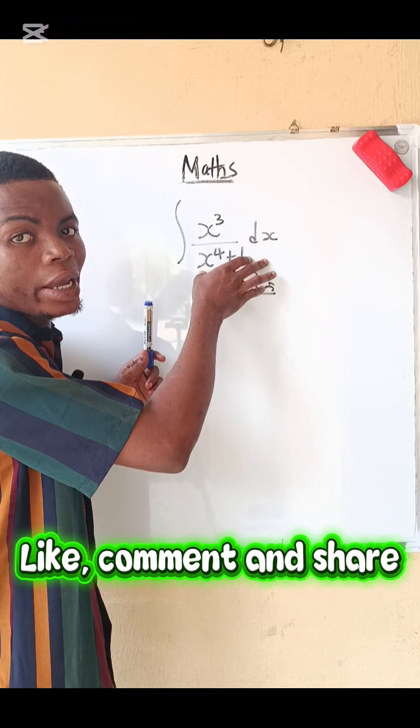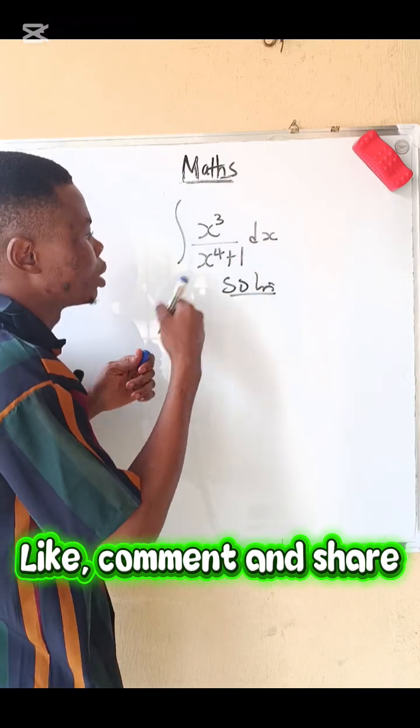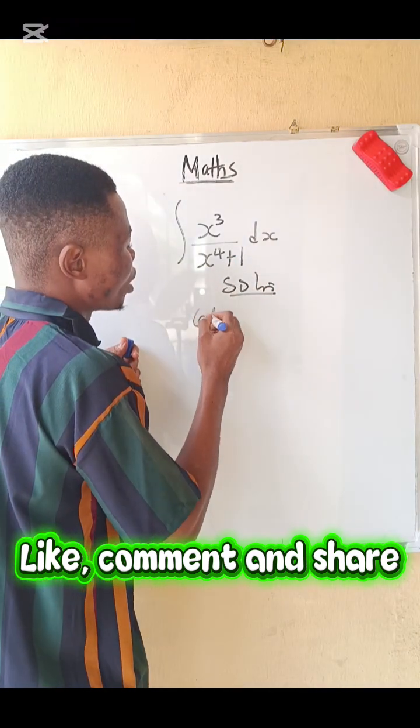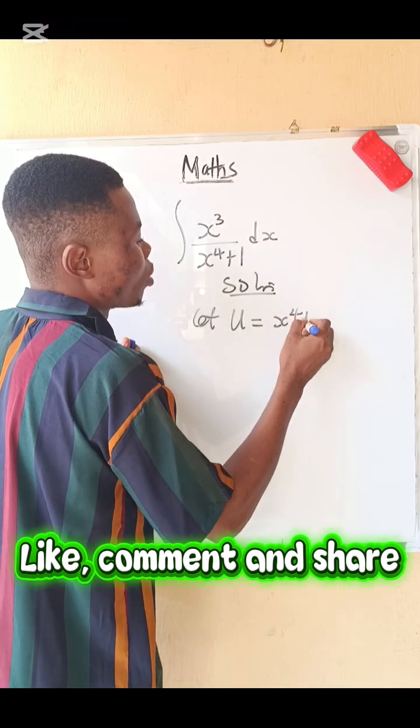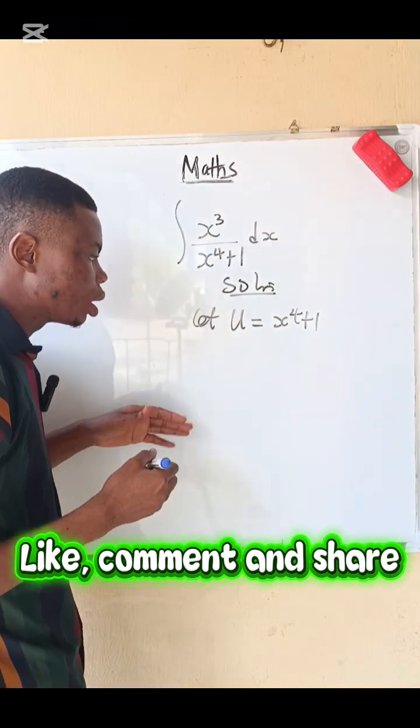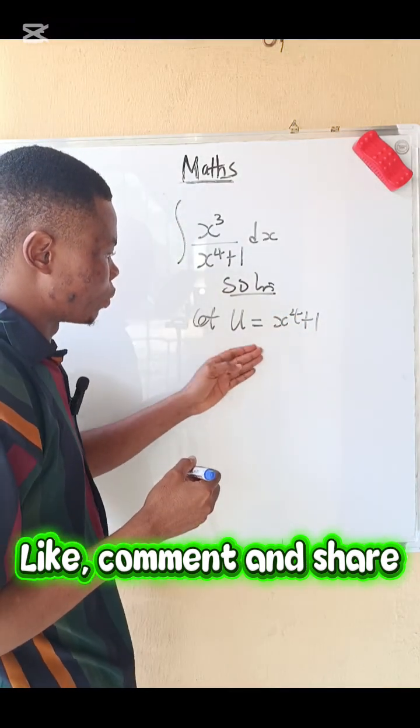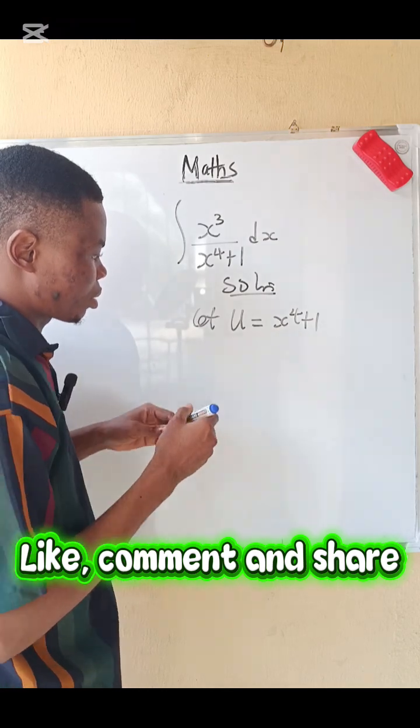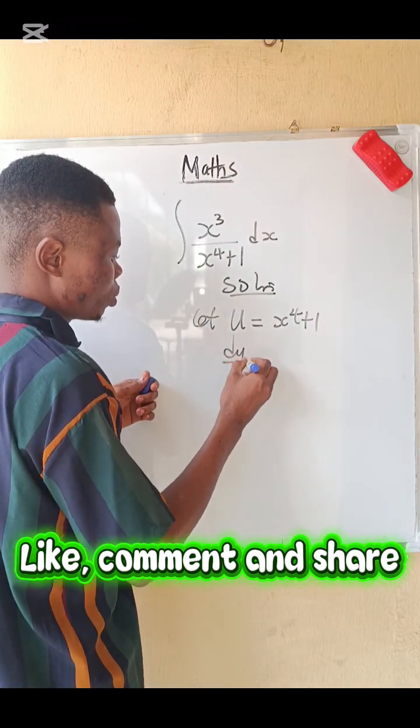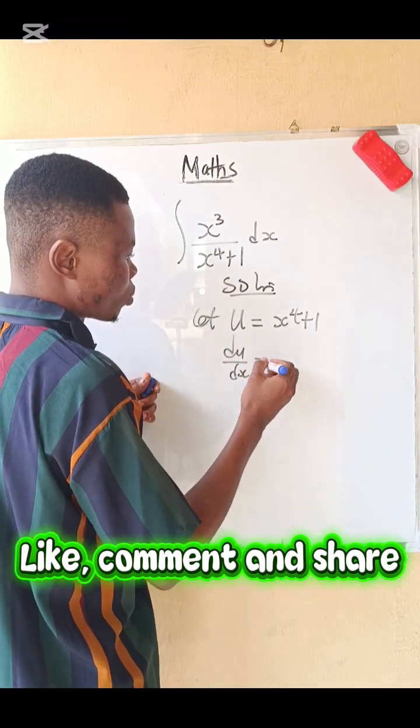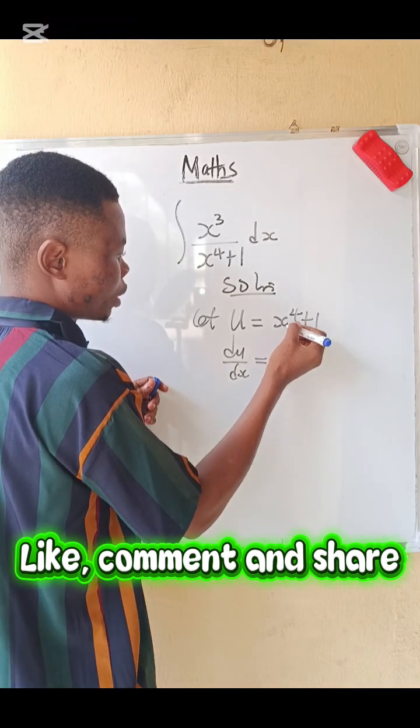I can say let u equals x to the power of 4 plus 1. So what do we do? We differentiate with respect to x. So du/dx equals 4 multiply this, so we have 4.